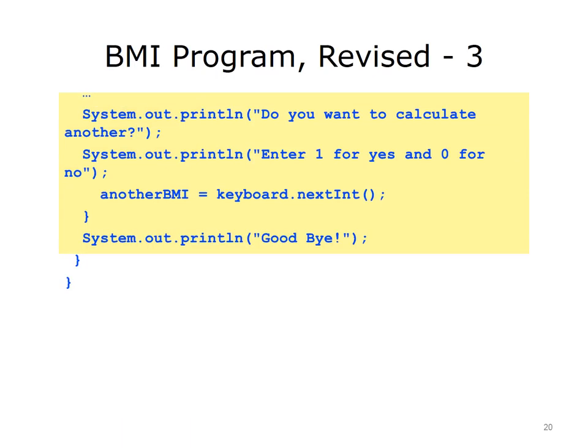The final part of the loop is also new. This is where the user is asked if he or she wants to calculate another BMI. If the user does want to calculate another BMI, he or she will enter the number 1; otherwise, the user will enter a 0. Actually, the user could enter anything other than 1 to end the loop. The next value for anotherBMI is read in, and the condition for the while loop is evaluated again. If anotherBMI is 1, the loop will execute again; if not, the loop will be skipped and the statement following the loop will execute — in this case, it prints goodbye to the screen.